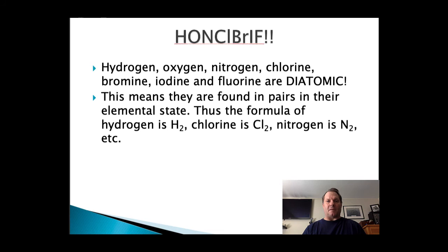One last point on naming. HONKlBrIF. That's hydrogen, oxygen, nitrogen, chlorine, bromine, iodine, and fluorine. Those elements, in HONKlBrIF, are what are called diatomic, meaning that they exist in pairs. So, hydrogen, when it's by itself, is H2. Why? Because it's part of HONKlBrIF. If I'm talking about bromine, bromine is Br2 when it's by itself. Why? Because of HONKlBrIF. When I talk about magnesium, it's just Mg. Why? Because it's not part of HONKlBrIF. So these HONKlBrIF elements are diatomic. Hydrogen, oxygen, nitrogen, chlorine, bromine, iodine, and fluorine.